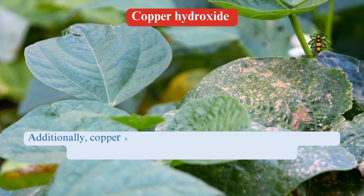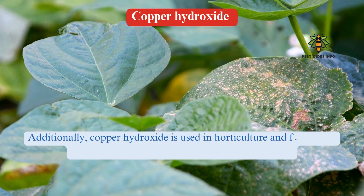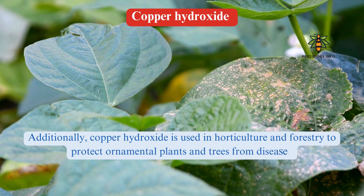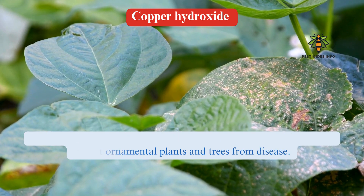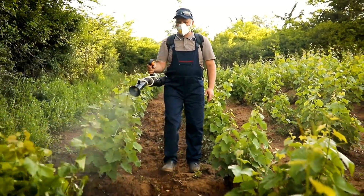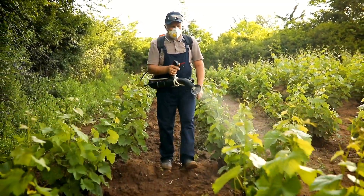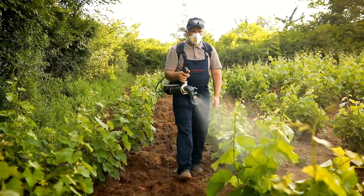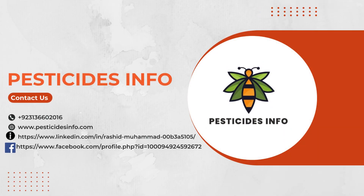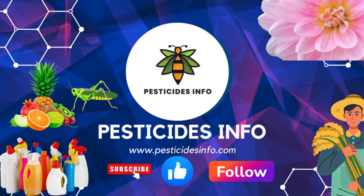Additionally, copper hydroxide is used in horticulture and forestry to protect ornamental plants and trees from disease. It is applied as a foliar spray or soil drench, providing protective coverage against pathogens. Users should follow label instructions carefully to ensure proper application and minimize environmental impact.